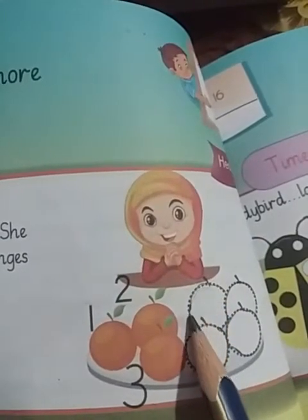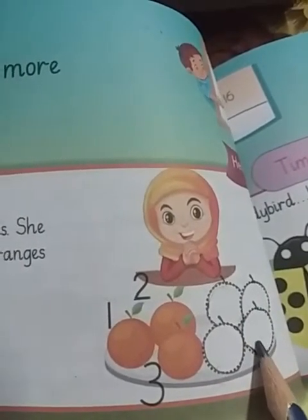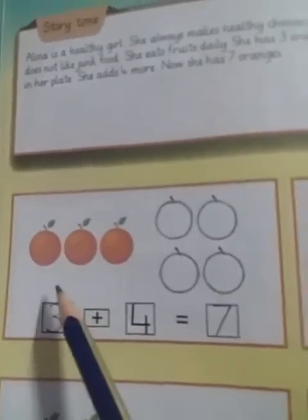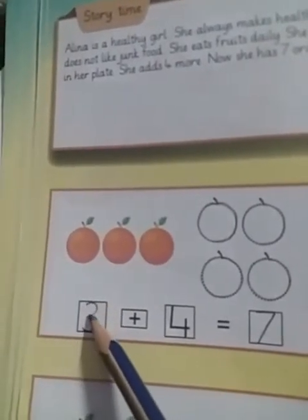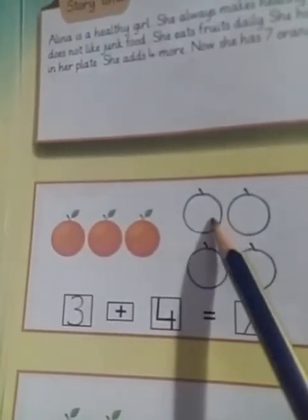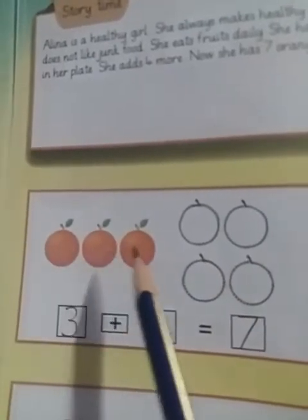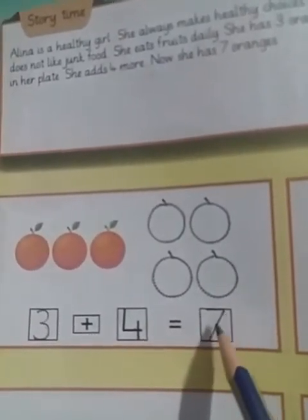Write on these dotted oranges: one, two, three, four. How many oranges altogether? One, two, three, four, five, six, seven — so Alina has seven oranges. Write here three, add four, draw four oranges, count all of them: seven. Write here seven.